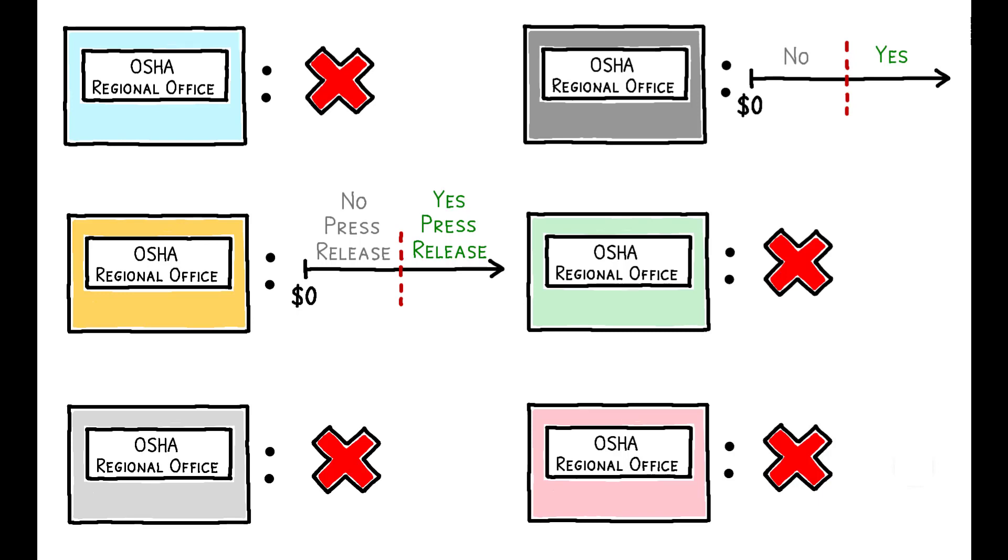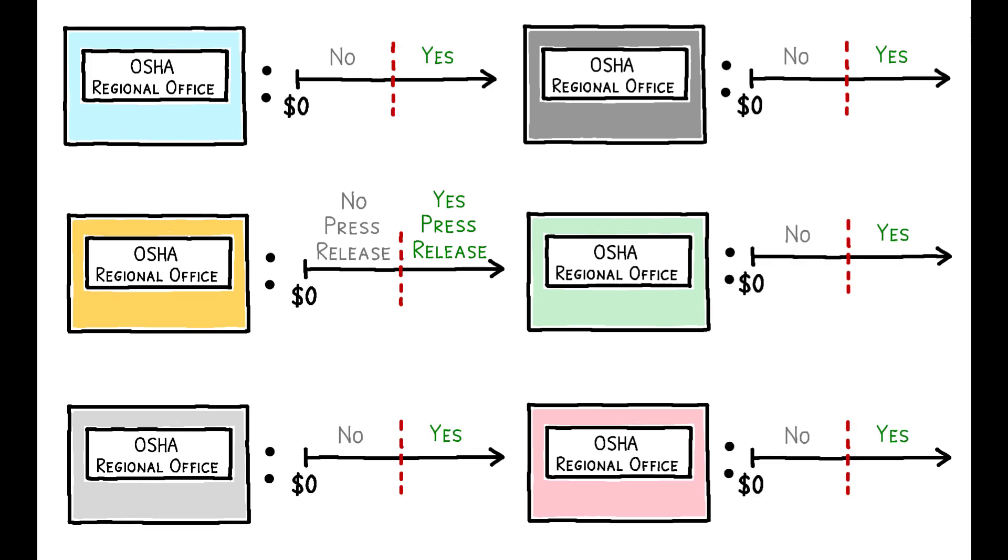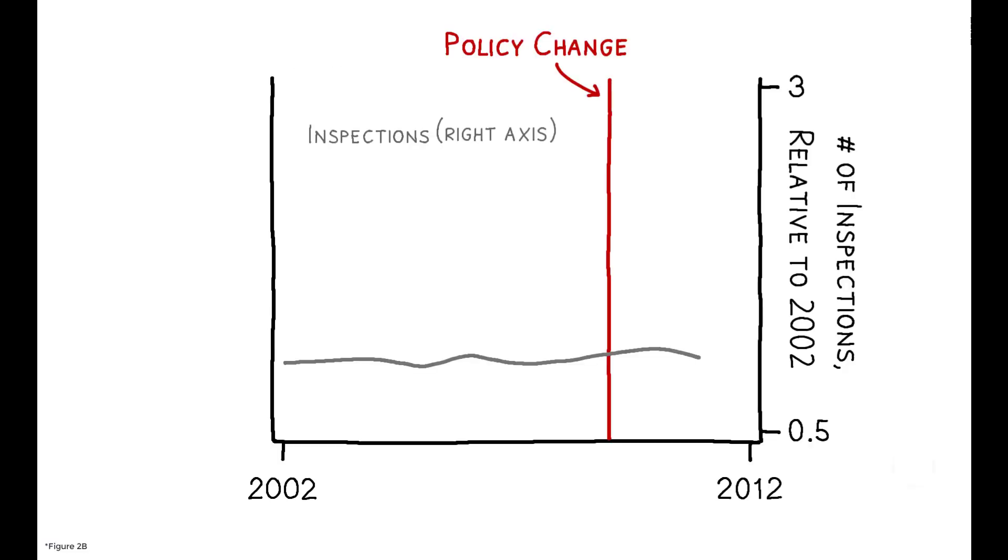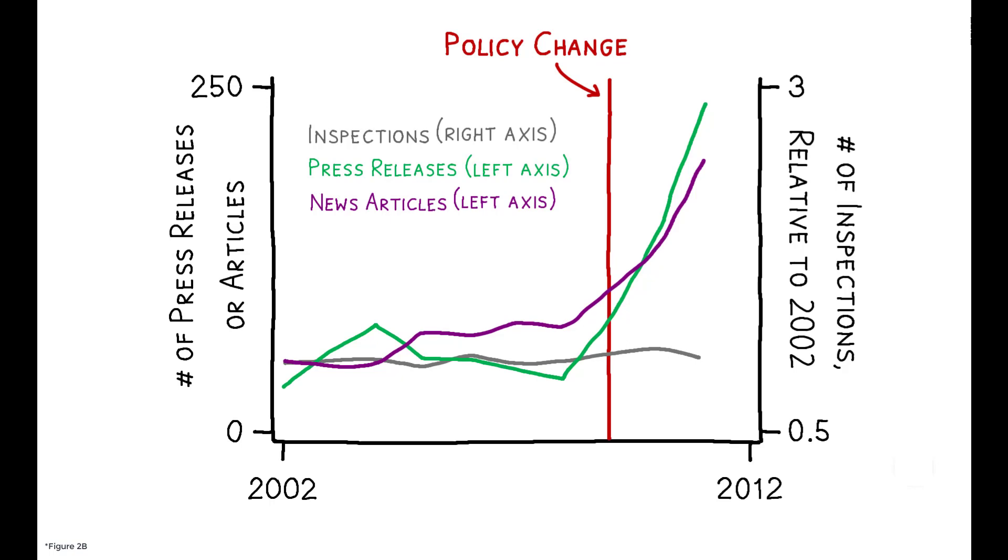In May 2009, however, the agency's national headquarters standardized these criteria and instituted common cutoffs across all regions. This policy change substantially increased the number of press releases issued, as well as broader media coverage of OSHA violations.